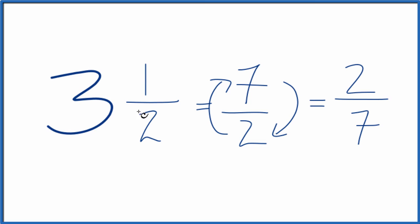That's the reciprocal for 3 and 1 half, and the reciprocal for 7 over 2. And we can check our work.